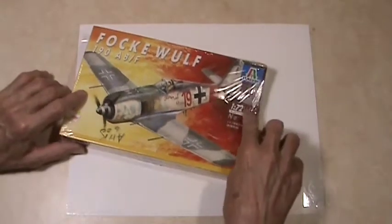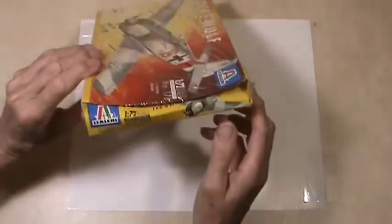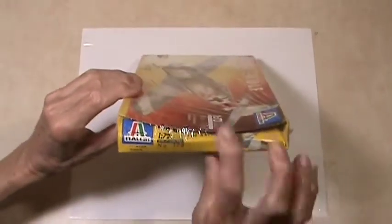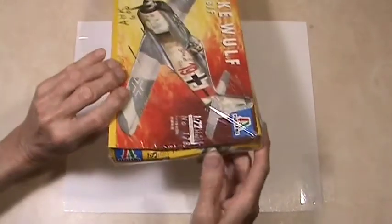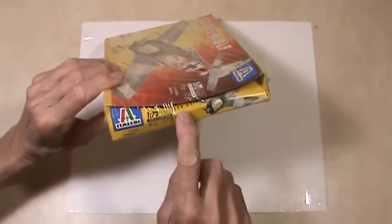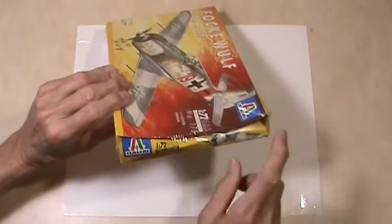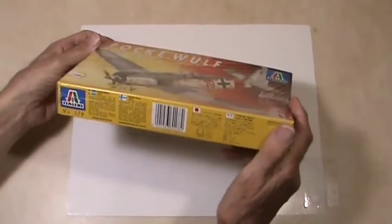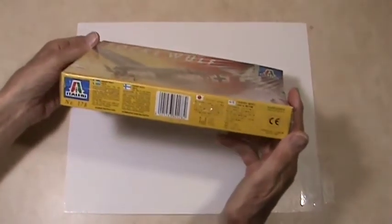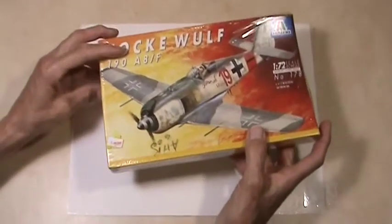As you can see, it's a little squished on the end, and that's probably just from storage. It's a little down here, but that won't affect the model. These are end-fold boxes, so it may be that when they shrink-wrapped it, it just pulled the end of the box down. But it's still in the shrink-wrap, and I think it's the original shrink-wrap on the box.